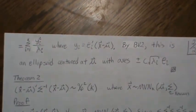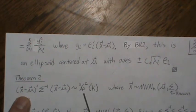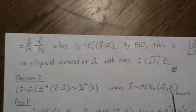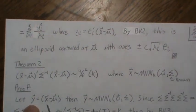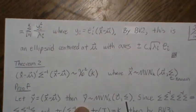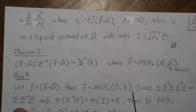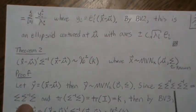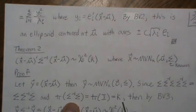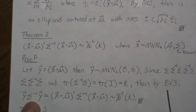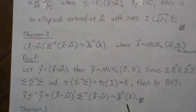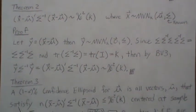Theorem two: the quadratic form (X minus mu)' Sigma-inverse (X minus mu) is chi-squared with k degrees of freedom, where X is multivariate normal with mean vector mu and known covariance matrix. The proof transforms to Y = X minus mu, which is multivariate normal with mean zero and the same covariance matrix. Since the covariance equals the identity after standardization and the trace equals k, by background video three this quadratic form is central chi-squared with k degrees of freedom.